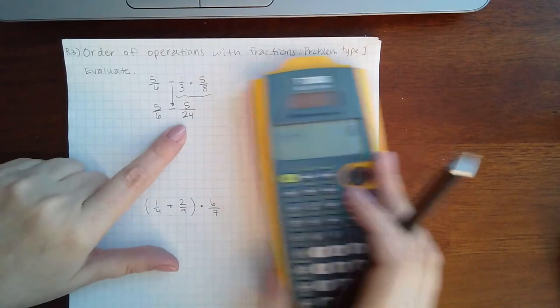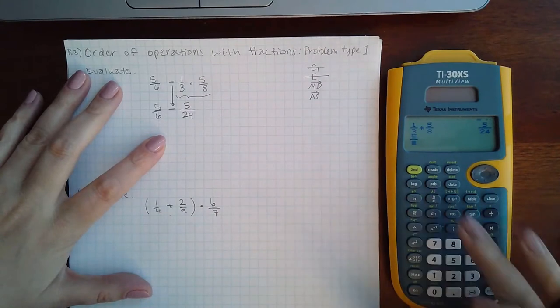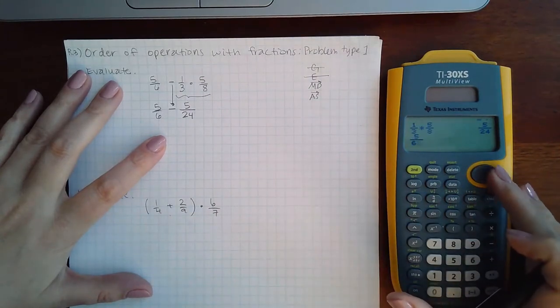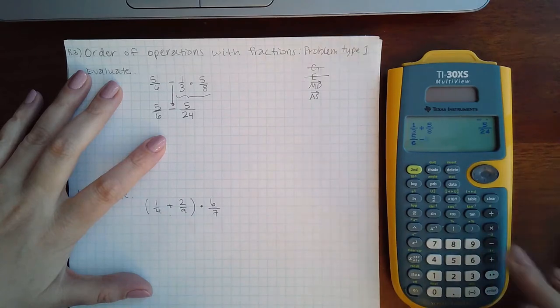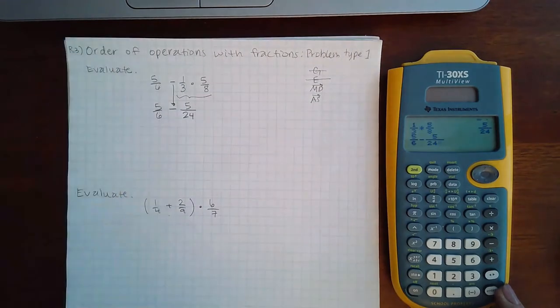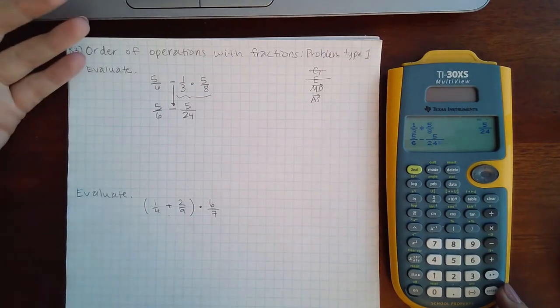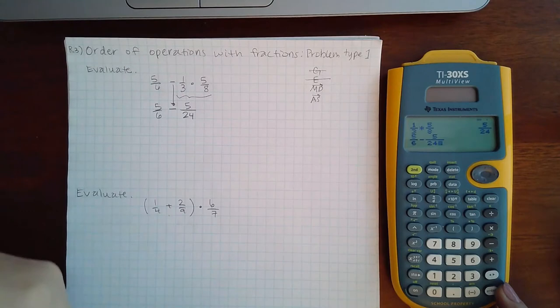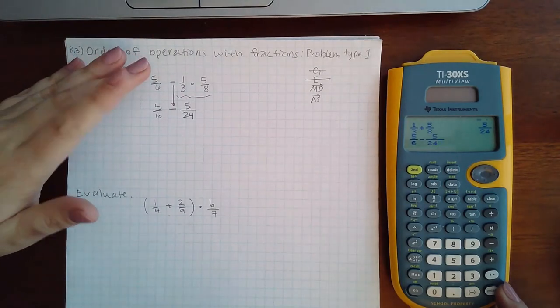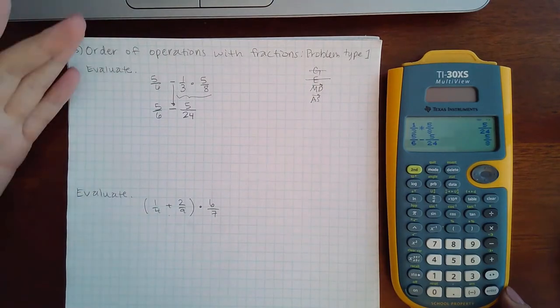Now the only thing left here to do is to do the subtraction. And again, that can be done in the calculator. So 5/6, then I'm going to hit the right arrow to get to the side, hit minus, and then type 5 fraction 24. Now, I know that in order for me to add or subtract fractions, I would have to get a common denominator, which would mean I would have to write equivalent fractions. And then once I had equivalent fractions, I could add or subtract the numerators. Nice thing about the calculator, though, is it does do all of that for you, and it even reduces the answer.